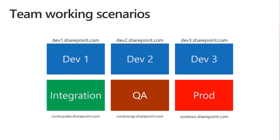But let's talk about a team working scenario where you've got a bunch of developers — Dev1, Dev2, Dev3 — they all have a different SharePoint URL: dev1.sharepoint.com, dev2, dev3, and so on.